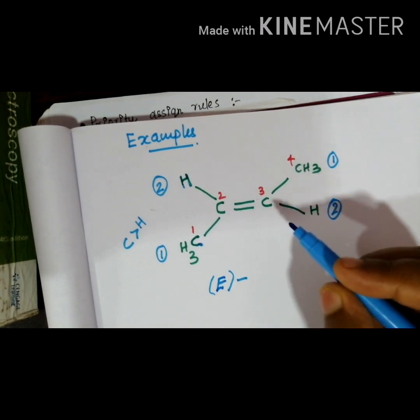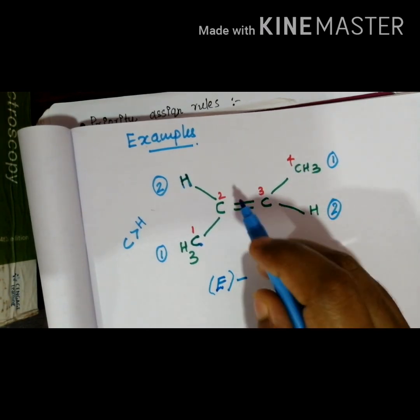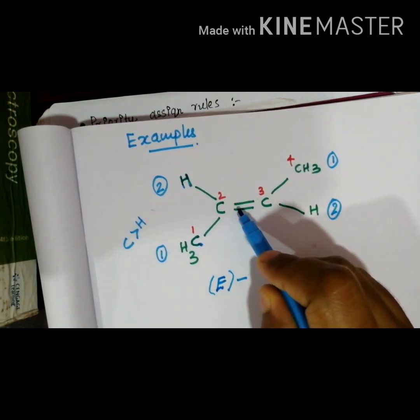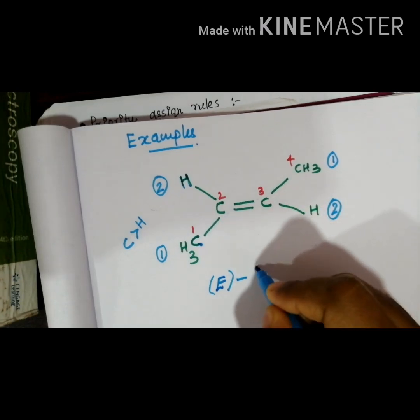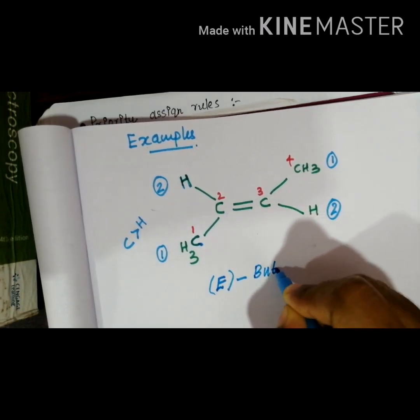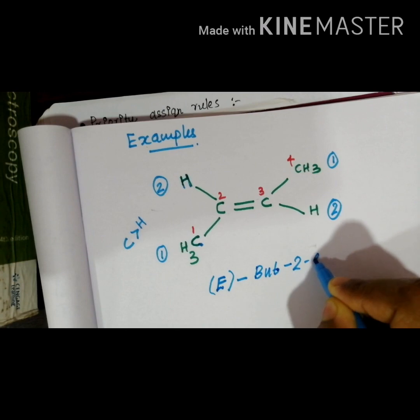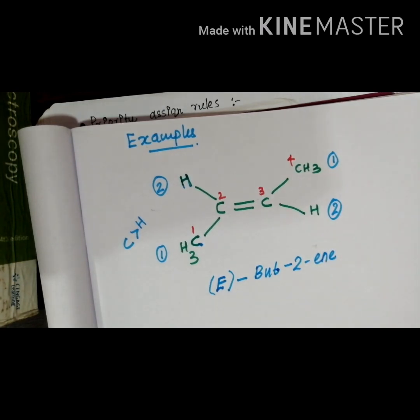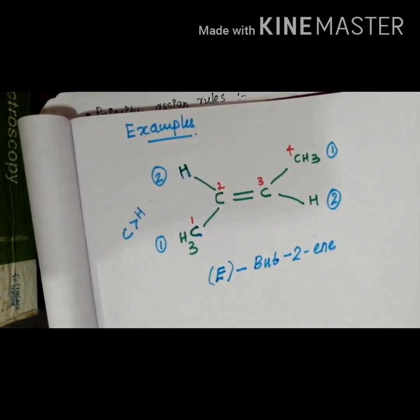That means 1, 2, 3, 4, it is butene and double bond presenting position number 2. Then it is called But-2-ene. This is the perfect naming, or you can write but-2-ene. But this is the more perfect way I think to represent the name.